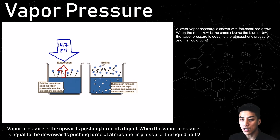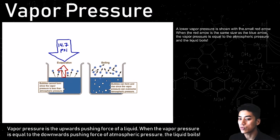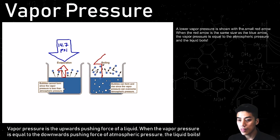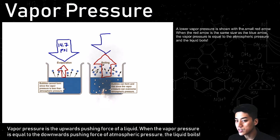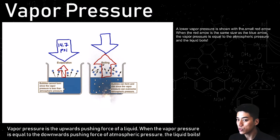However, the water is constantly evaporating, so I'm going to draw a small upwards arrow, and this represents the vapor pressure of water at room temperature or at a cooler temperature. On the right-hand side, when you heat up the water, it starts to boil because the vapor pressure starts to grow. I'm going to draw a big red arrow, and it is now the same as the downwards pushing force of atmospheric pressure.